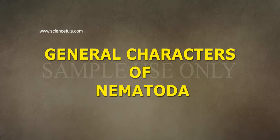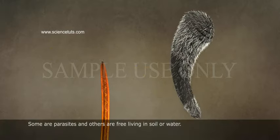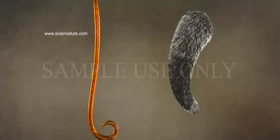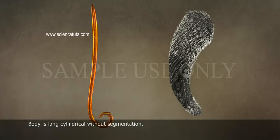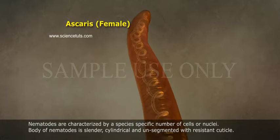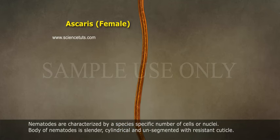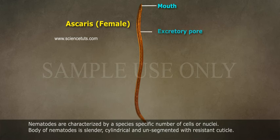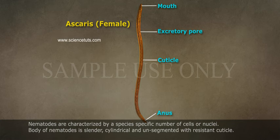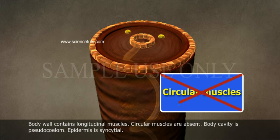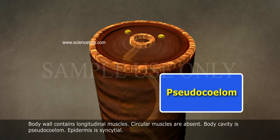Some nematodes are parasites and others are free-living in soil or water. The body is long and cylindrical without segmentation. Nematodes are characterized by a species-specific number of cells or nuclei. The body is slender and cylindrical, unsegmented, with a resistant cuticle. The body wall contains only longitudinal muscles; circular muscles are absent. The body cavity is a pseudocoelom.